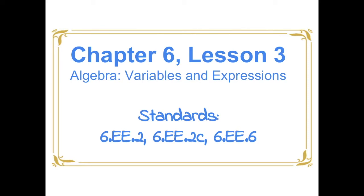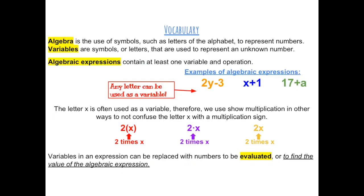Chapter 6, Lesson 3: Variables and Expressions. Algebra is the use of symbols, such as letters of the alphabet, to represent numbers. Variables are symbols or letters that are used to represent an unknown number. Algebraic expressions contain at least one variable and an operation.